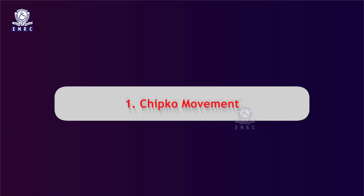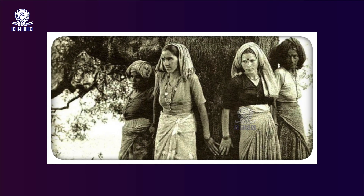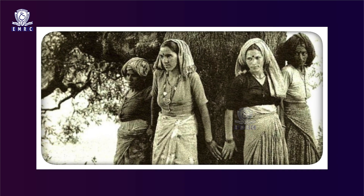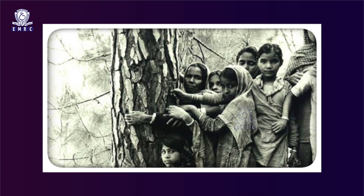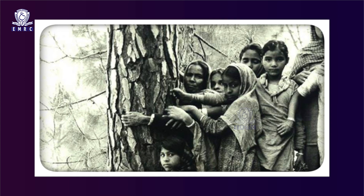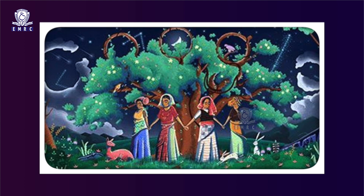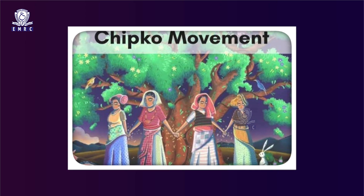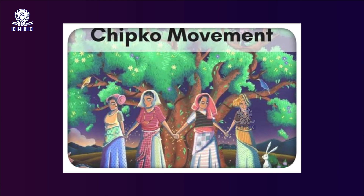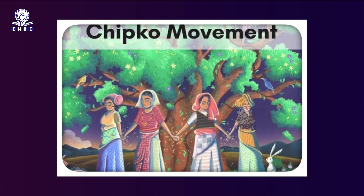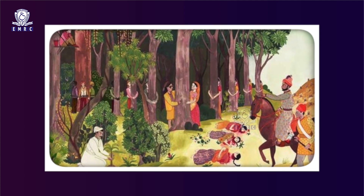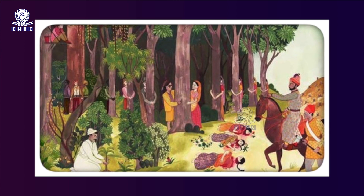The Chipko movement was born in a small hilly village, Advani, in Tehri Garhwal district of Uttar Pradesh, now in Uttarakhand. The illiterate Adivasi women led this movement in December 1972. It challenged the old belief that forests mean only timber and emphasized their roles in making soil, water, and pure air as the basis of human life. This philosophy popularized the movement in many countries. The women symbolically tied sacred threads around the trees, faced police firing in February 1978, and later also courted arrest.